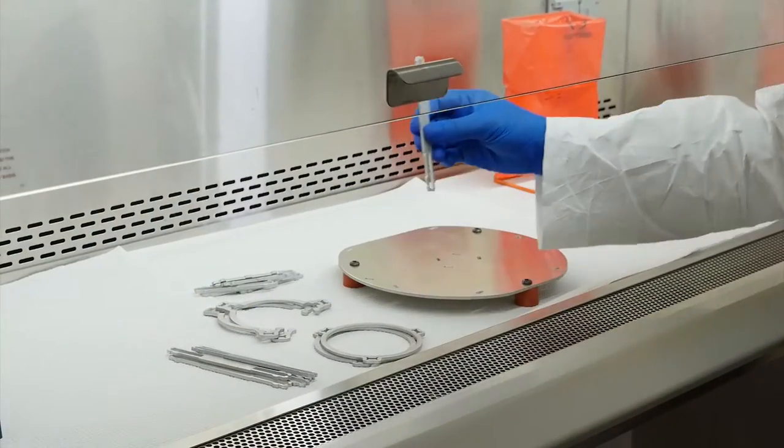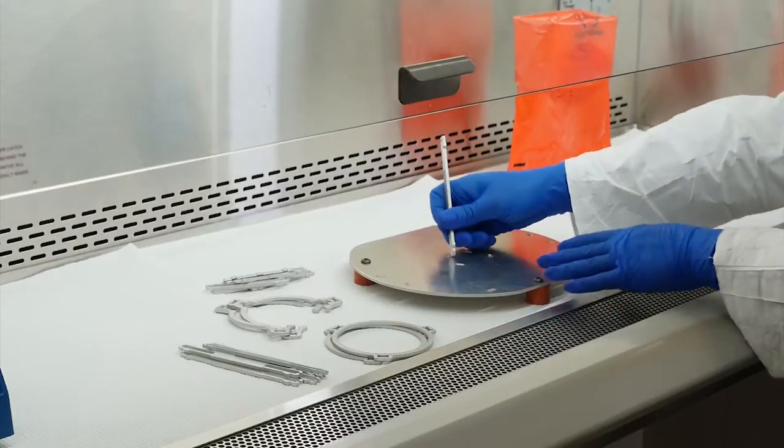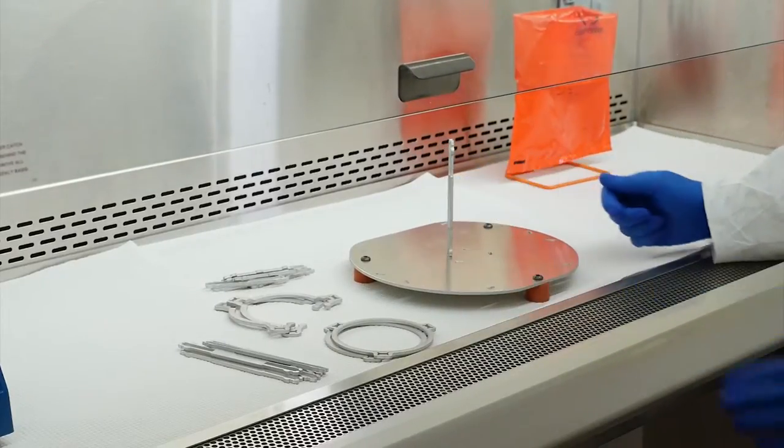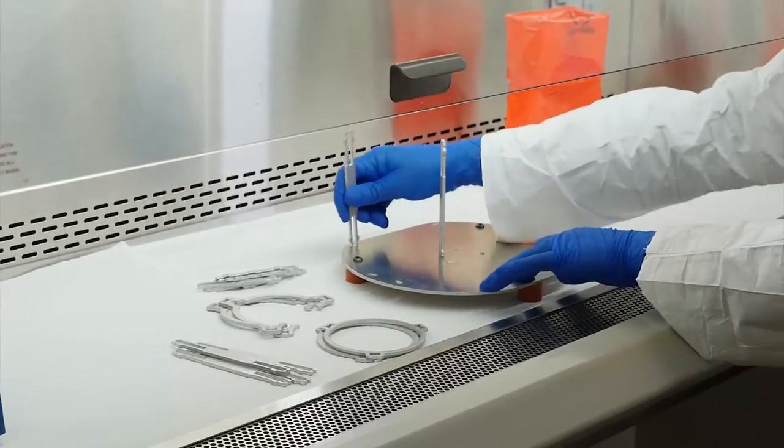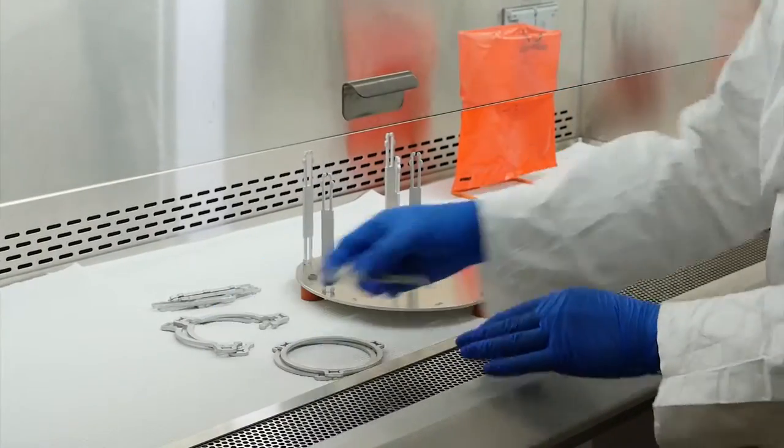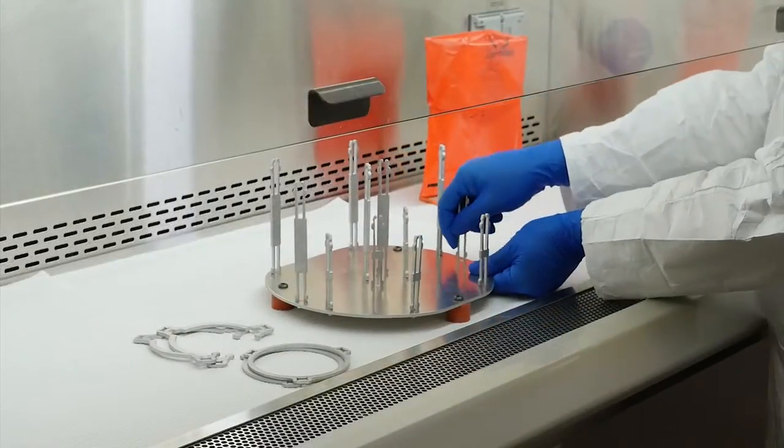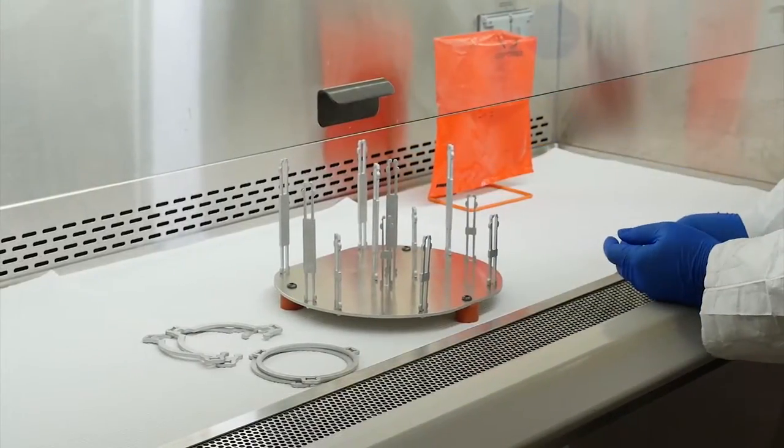To assemble the elution device stand, take a tall leg, squeeze it near the bottom, and insert it into one of the six slots near the back. Some slight rocking back and forth may be necessary to insert the leg. Repeat this step for the other five tall legs. Insert the six short legs into the remaining front slots.